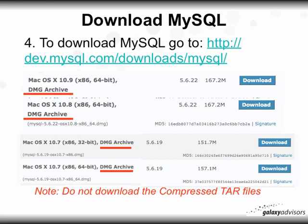Now, download MySQL. Go to http://dev.mysql.com/downloads/mysql. All these URLs are listed under 'Show More' beneath the YouTube video, so it's easier to copy and paste. You'll see the current versions: OS X 10.9 (which also runs on 10.10 Yosemite), 10.8 for Mountain Lion, and the older 10.7 for Lion. Download the appropriate package depending on your OS X version and bit kernel. Do not download the compressed tar files — these instructions are for the .DMG files.